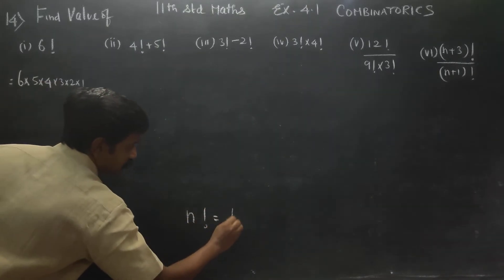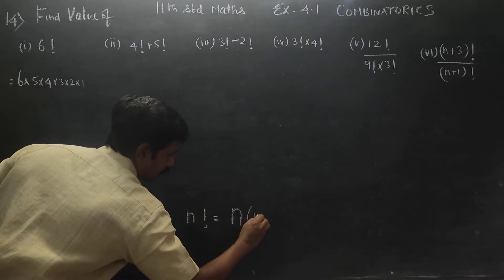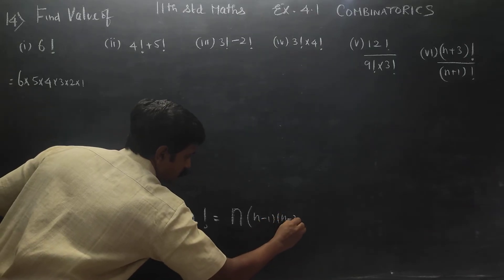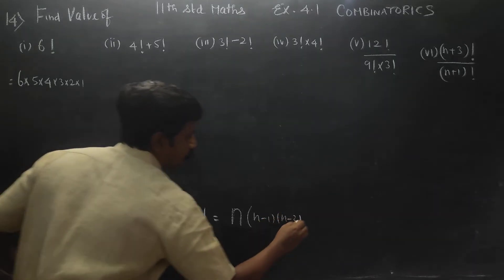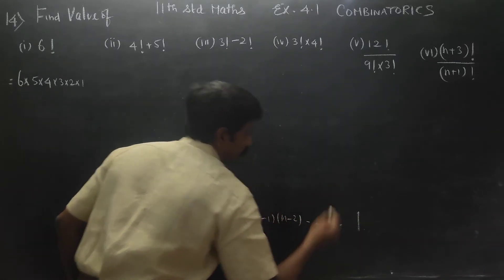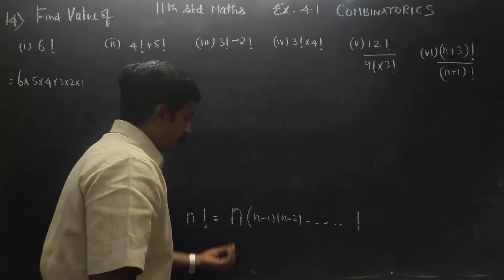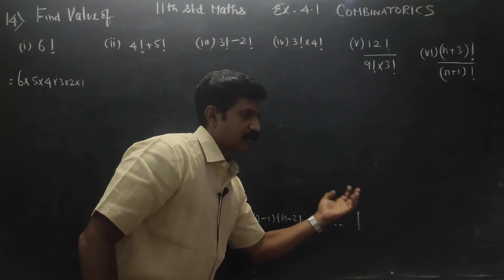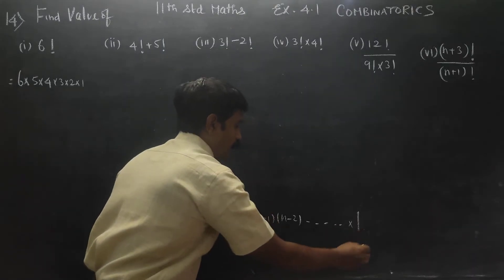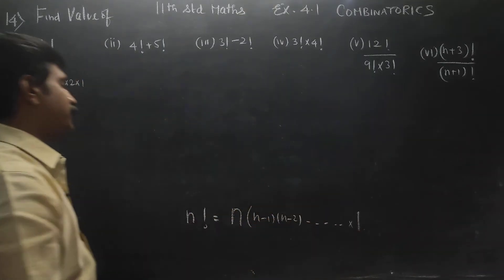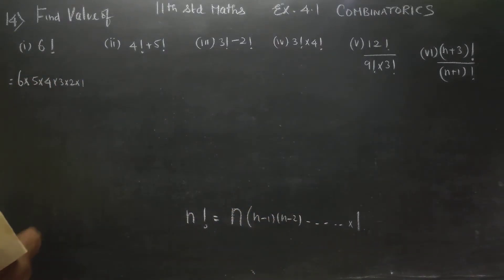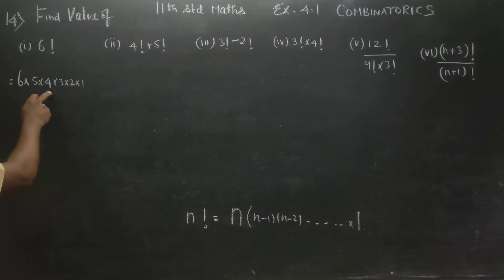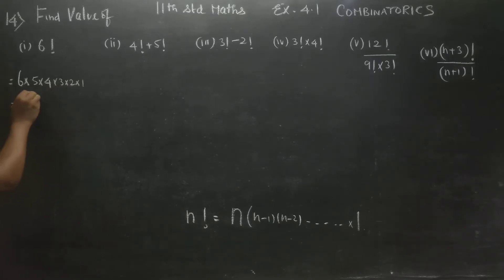n factorial is equal to n into n minus 1 into n minus 2, dot dot dot, you have to reach 1, decreasing each term by 1 — everything under product, multiplication. So 6 factorial: 6 into 5 is 30, into 4 is 120... the final answer is 720.